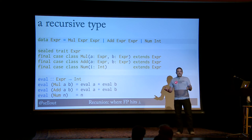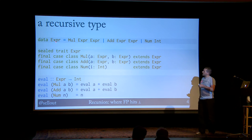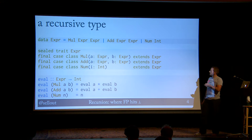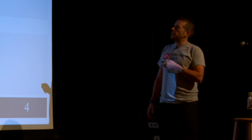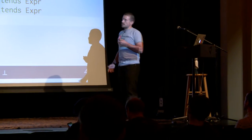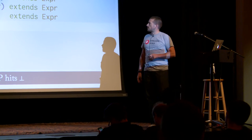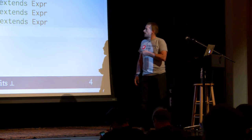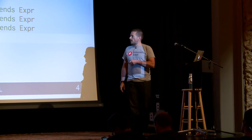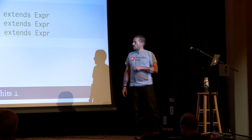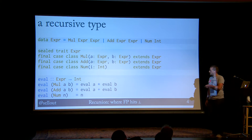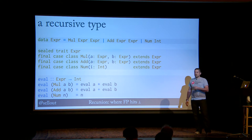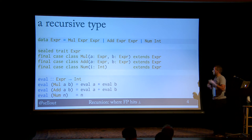So, recursion. First, you have recursive data types. This expression can either be a multiplication, which recursively refers to two expressions that are going to be multiplied; an addition, which again refers to two expressions; or a Num, which is just an integer — that's your leaf node. And here in Haskell is a simple evaluator: for the multiplication case, you recursively call eval on each of those expressions and multiply the results; for addition, you do the same with adding; and evaluating a Num is just returning the number itself. This is the standard way you'd write something like this — you just recursively go through the data structure.